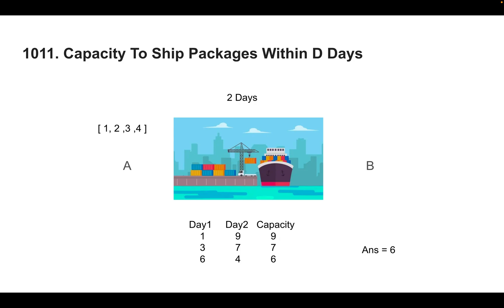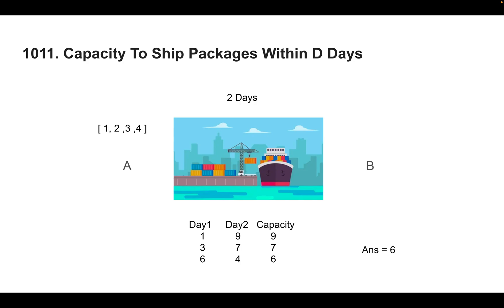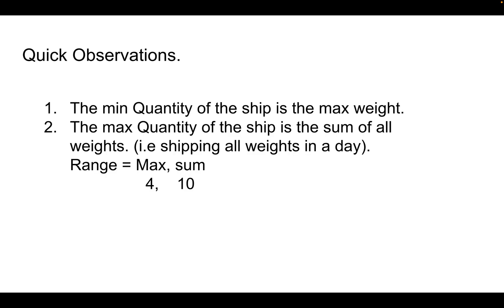Now let's look at the key observations. The minimum capacity the ship must have is the maximum element in the weights array — because even if you transport one item per day, you still need to carry the heaviest item. The maximum capacity needed is the sum of all weights, which covers transporting everything in one day. So you now have a range: minimum = max(array) and maximum = sum(array). In this example, the range is 4 to 10.